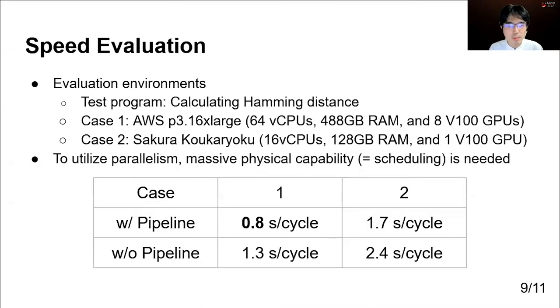We evaluated our implementation by running it in real environments. We shall show two cases. Case 1 is AWS P3.8XLarge, which is equipped with 8 V100 GPUs. And Case 2 is Sakura High-Power, which is equipped with 1 V100 GPU. In both cases, introducing the pipeline gives better performance by increasing parallelism. Case 1 is the fastest case among all tested cases. We achieved about 0.8 seconds per cycle, which means we constructed a 1.25 Hz clock speed processor over TFHE.